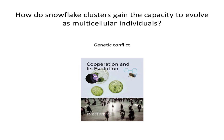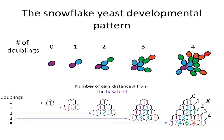Snowflake yeast are pretty good Darwinian individuals in the sense that they evolve as multicellular wholes. One of the main challenges multicellular organisms face in becoming multicellular is figuring out how to quell genetic conflict — how to solve the problem of cells within an organism being competitors rather than cooperators. Why should a cell give up its own life for the sake of its brethren? Why should my skin cell give up its own reproductive self-interest to help the rest of my body?